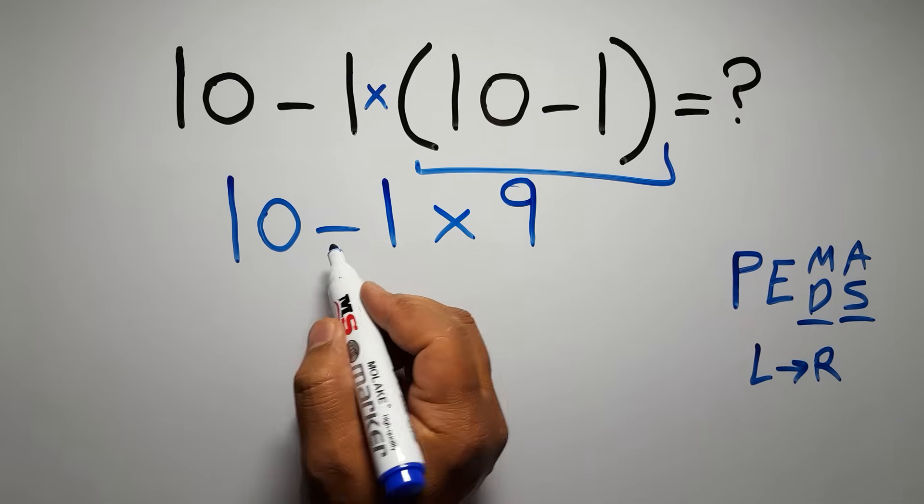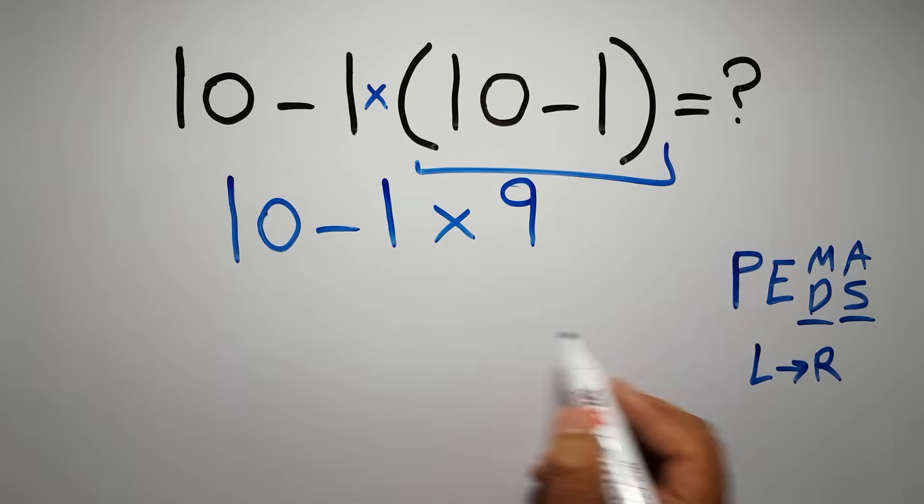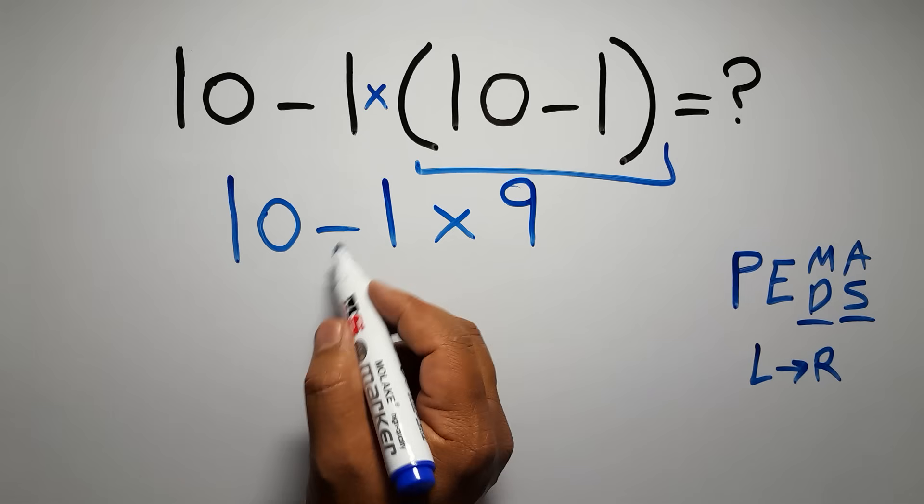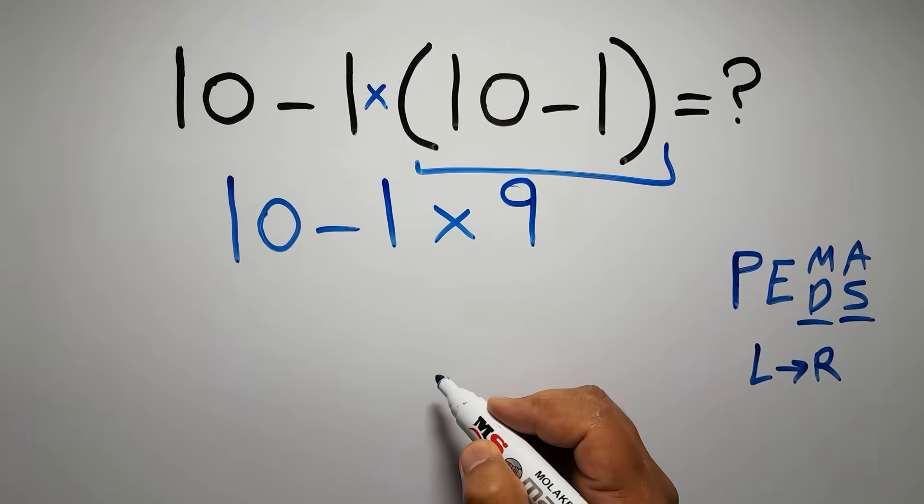Now, we have one subtraction and one multiplication. According to PEMDAS, multiplication has higher priority than subtraction. Multiplication comes before subtraction.